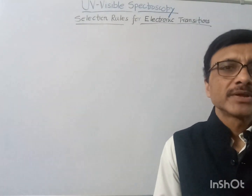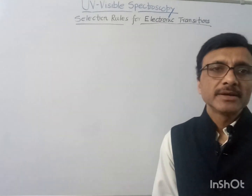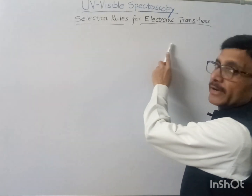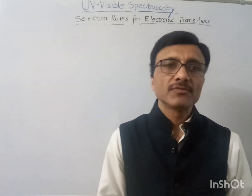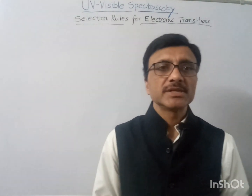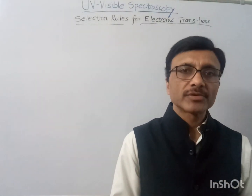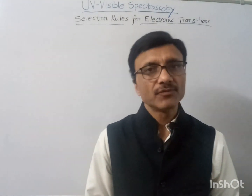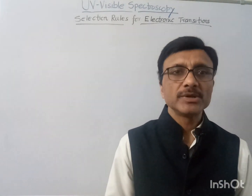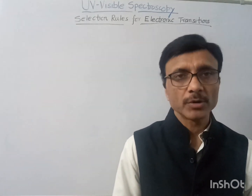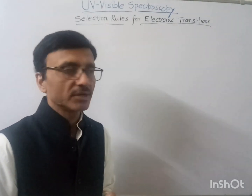Hello students, welcome. In UV visible spectroscopy, today I will explain the selection rules for the electronic transitions. Various electronic transitions are possible when UV visible radiation is absorbed by any molecule. Some of the transitions are allowed transitions and some are forbidden transitions. There are certain rules which govern these transitions.